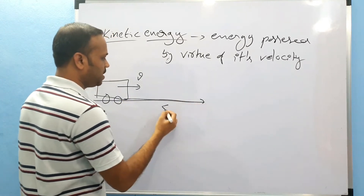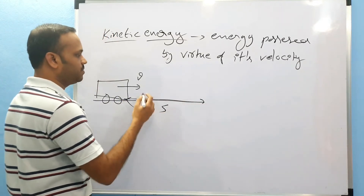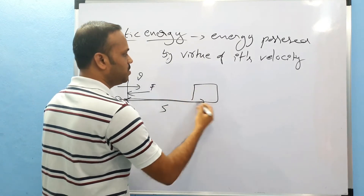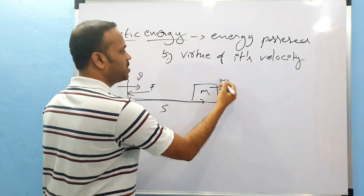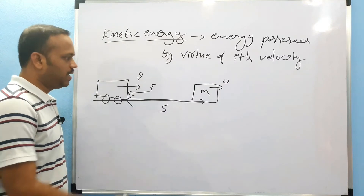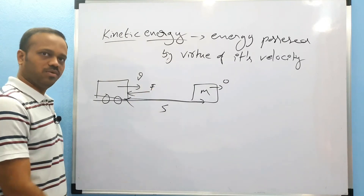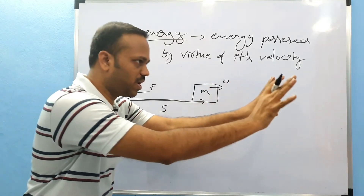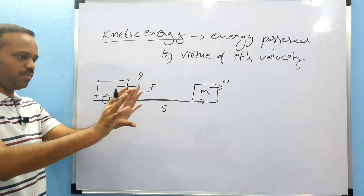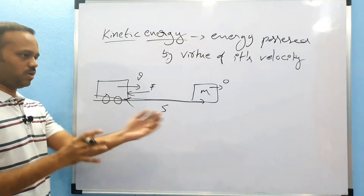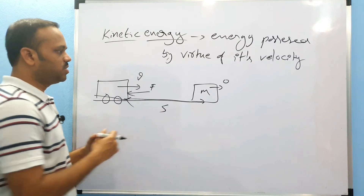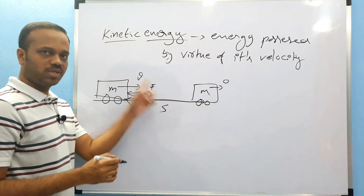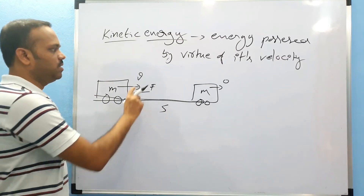Now, if we have some distance S and a force F applied — say Superman is applying force over a distance S to stop the car. Let us see.